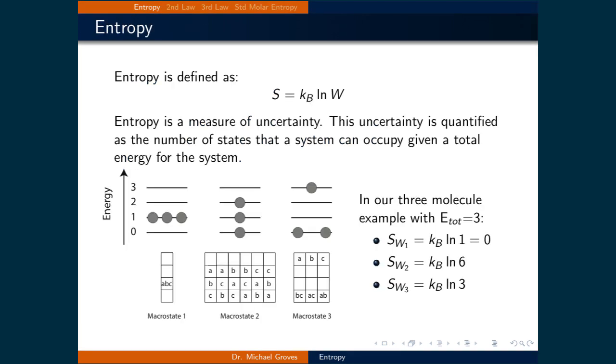Entropy, typically denoted as capital S, is defined as S = kB ln W, where W is the number of microstates in a given macrostate. A lot of reference material defines entropy as a measure of disorder. A better simile is that it is a measure of uncertainty, since it is not usually known which microstate the system is in. The uncertainty is quantified as the number of states that a system can occupy given a total energy for the system.